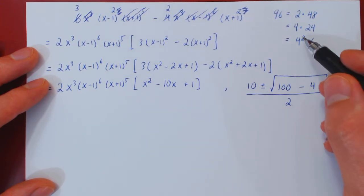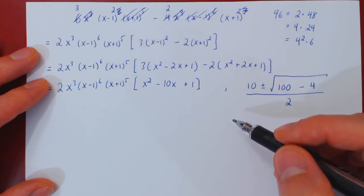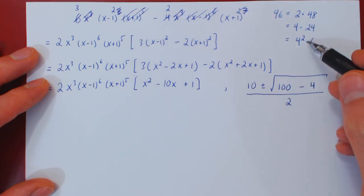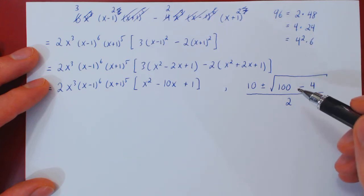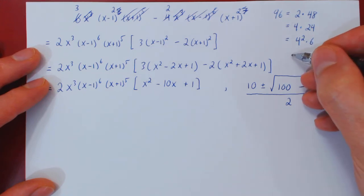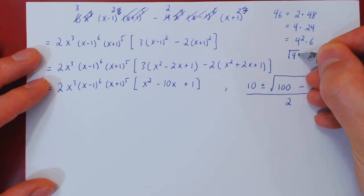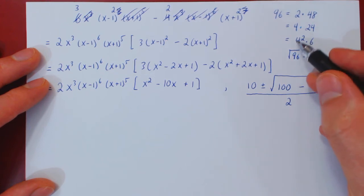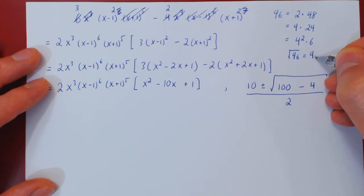And again, we factor this way because now we have a perfect square. In 6 there are no longer any perfect squares, so this will give us the best possible answer. Which means the square root of 96 will be the root of this. The root will cancel the square, so it will be 4 times root of 6.